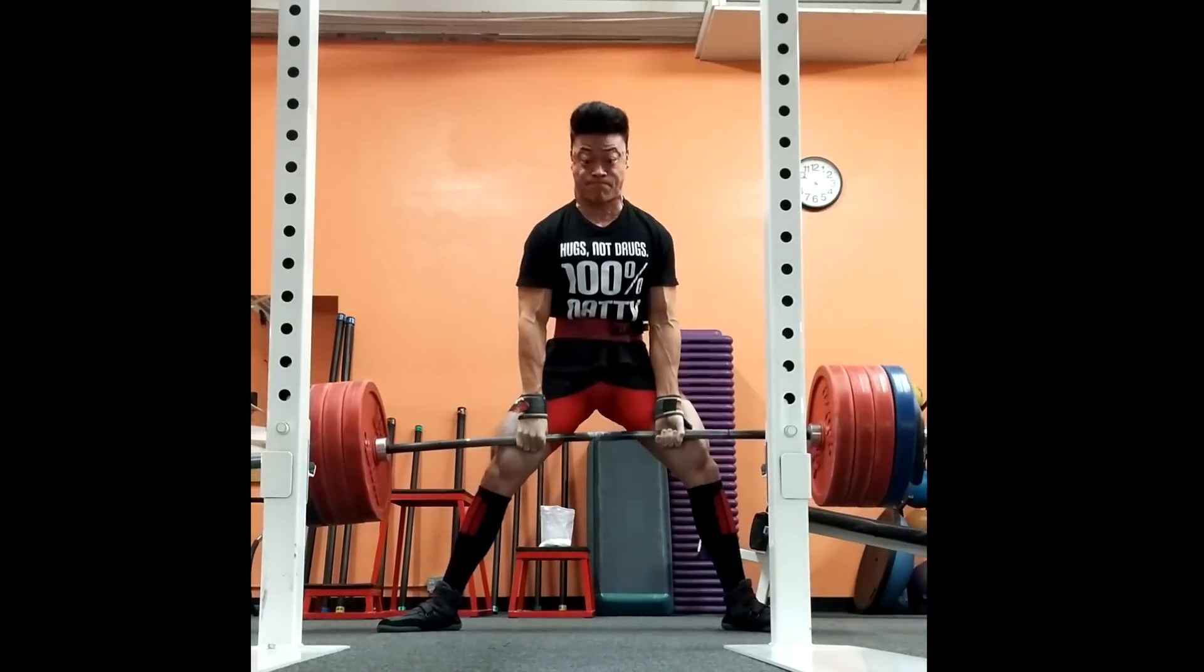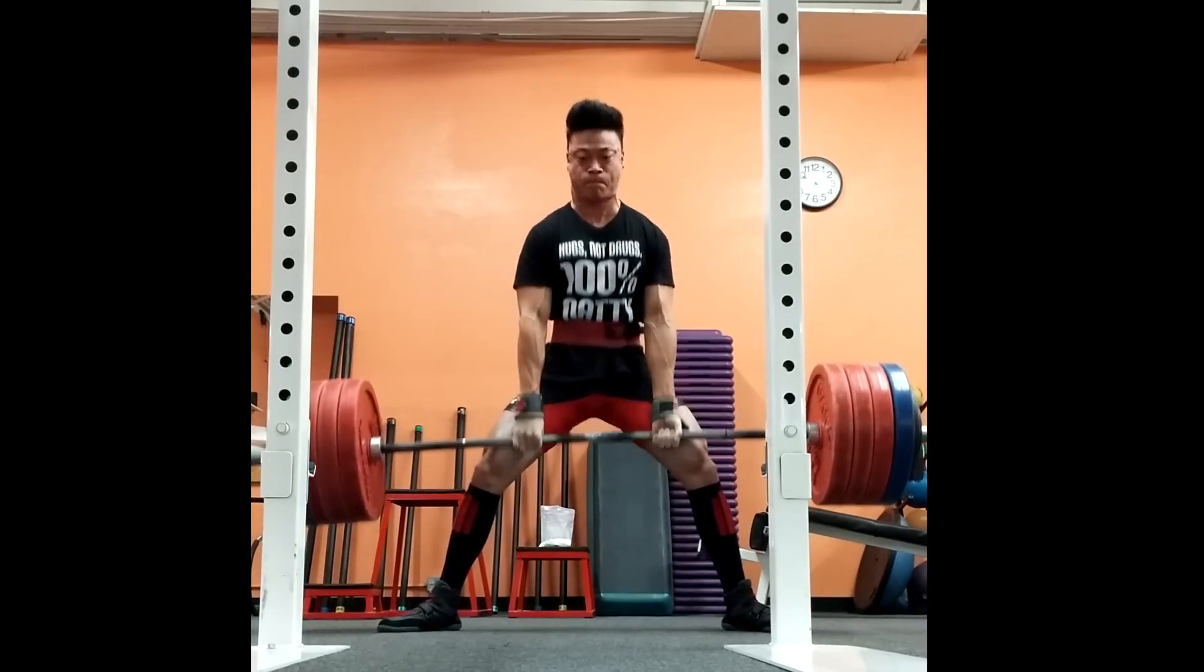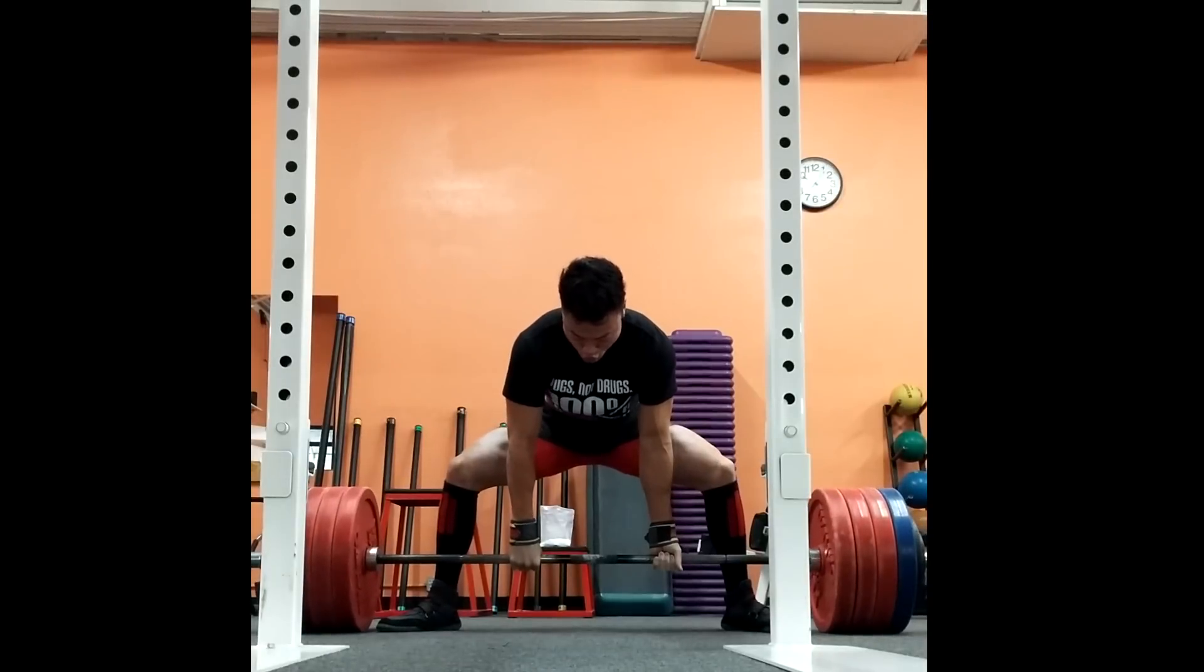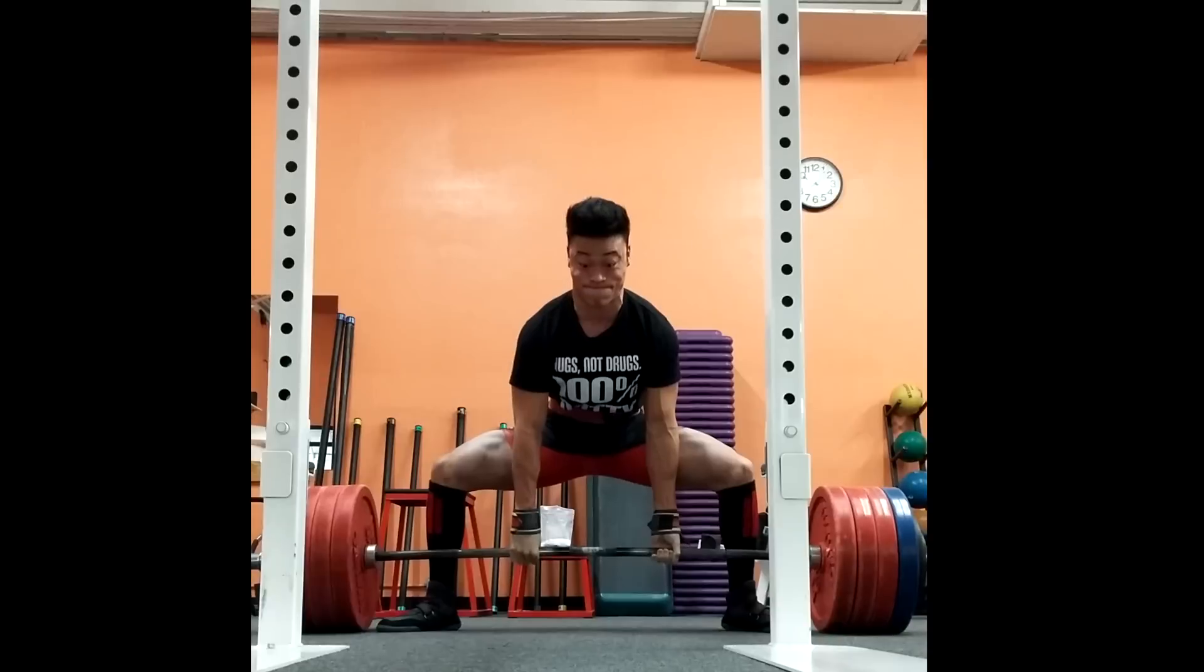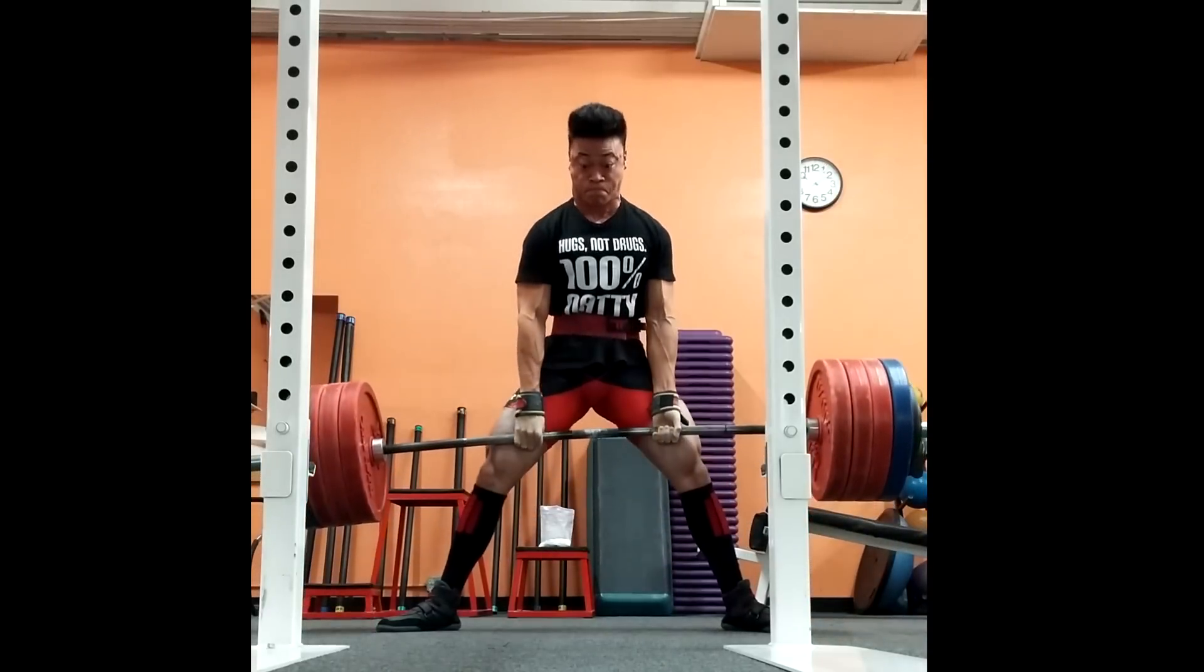My knees start outward and they stay out there. My hips and shoulders rise together as I break the floor. Knees lock out first and then I finish the rep with my hips.